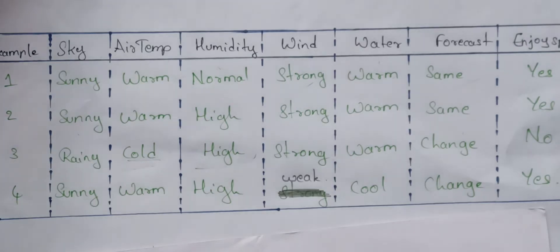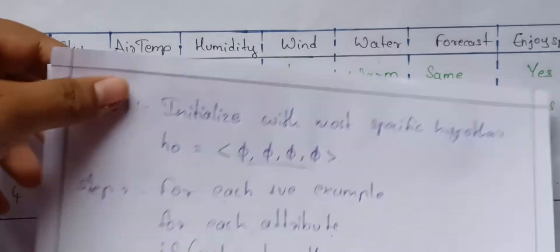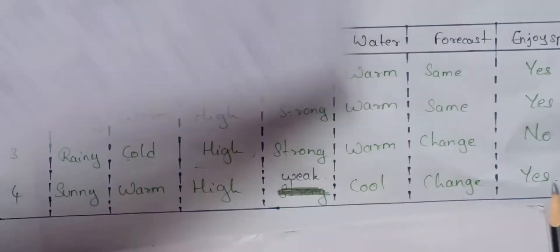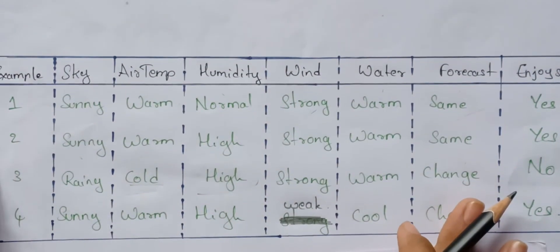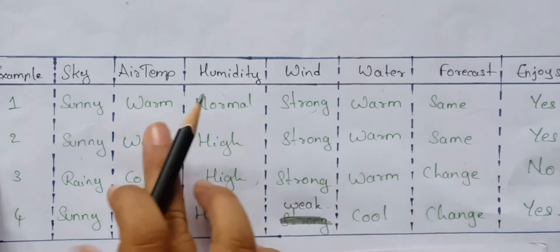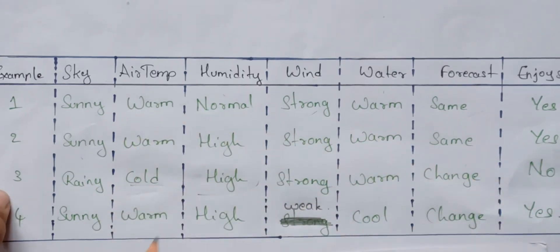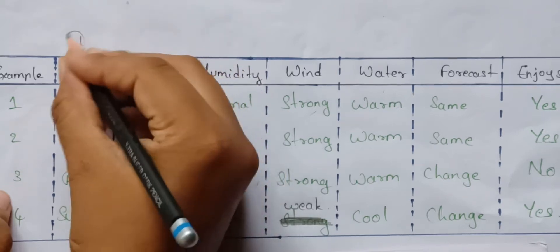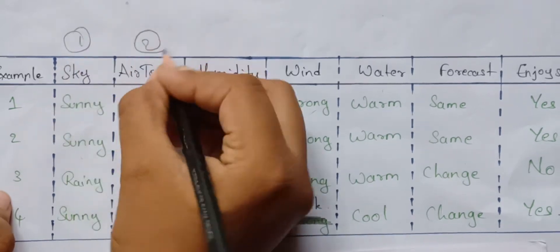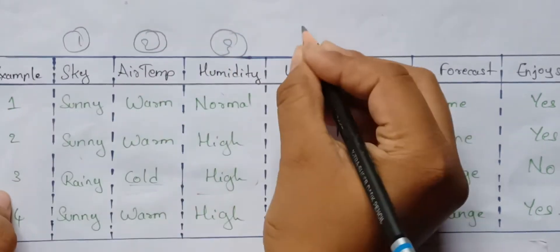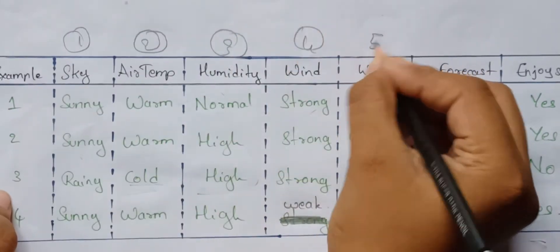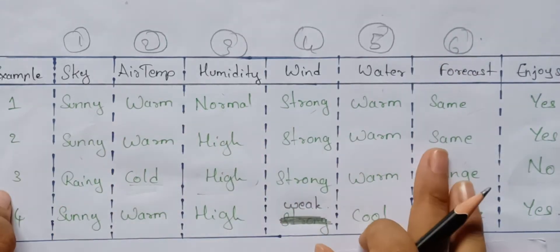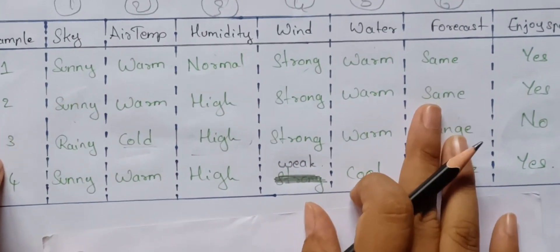I am going to initialize with the most specific hypothesis. We will give 6 attributes. So n has 1, 2, 3, 4, 5, 6 — we will give 6 attributes.